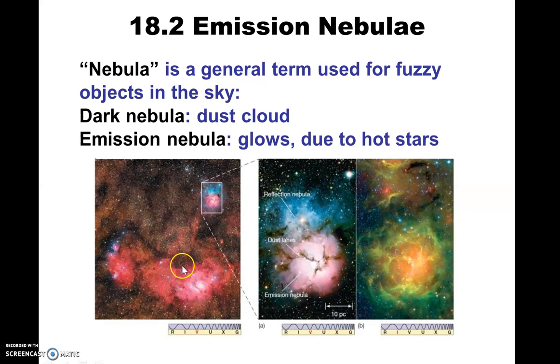These are the dark lanes that they were talking about. That's just where the dust is so thick that visible light is completely obscured.